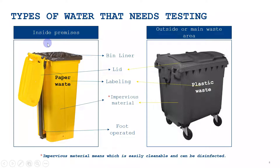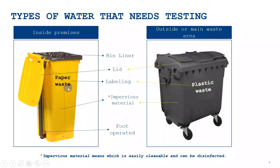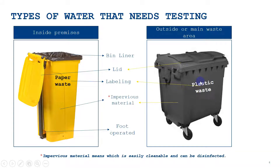For waste management inside the premises, the waste bin should be foot-operated, should have a bin liner, should have a lid cover, and you need to label it - for example, 'paper waste' if you are only disposing paper waste, or 'food waste' if you are using it for food waste. The material should be impervious, meaning it should not react with the material placed inside.